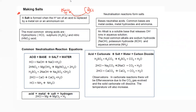The most common strong acids are hydrochloric acid, sulfuric acid, and nitric acid. To prepare a chloride salt, use hydrochloric acid; for a sulfate salt, use sulfuric acid; and for a nitrate salt, use nitric acid.